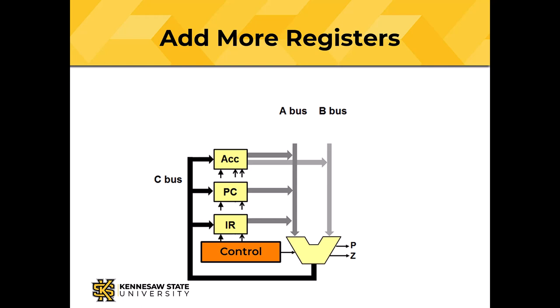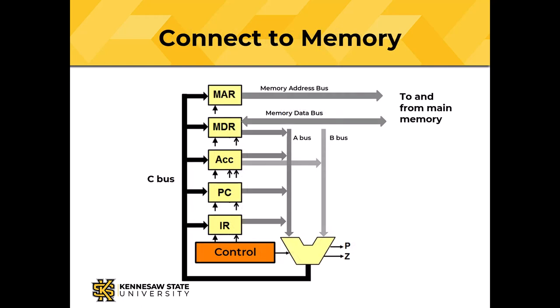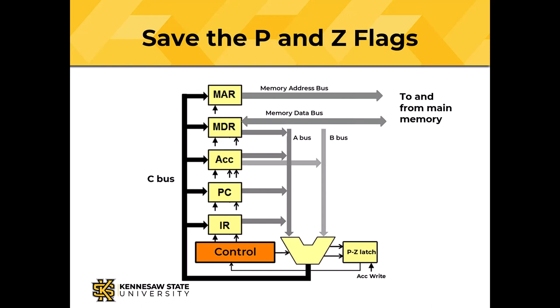At most, one register can be selected for each bus in one clock cycle. Closed-head arrows mean the signal depends on the clock to be effective; open-head arrows mean the signal is effective whenever it's asserted. Now we add connections to memory with two more registers: the memory address register and the memory data register. The memory address register can only accept address information from the C bus. The memory data register can send data to the A bus or accept data from the C bus. We add one more register, the PZ latch, which stores only two bits — the P and Z flags from the ALU. The P and Z bits are saved any time the accumulator is loaded, so they always reflect the contents of the accumulator.